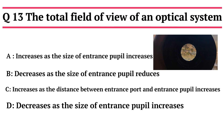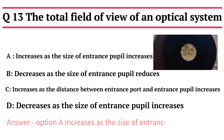Question 13: The total field of view of an optical system: A - increases as the size of entrance pupil increases, B - decreases as the size of entrance pupil decreases, C - increases as the distance between the entrance coat and entrance pupil increases, D - decreases as the size of entrance pupil increases. The correct answer is Option A: increases as the size of the entrance pupil increases.